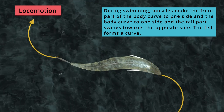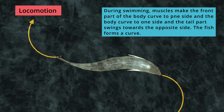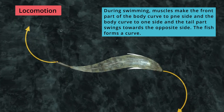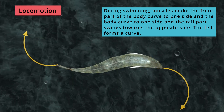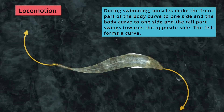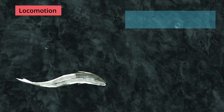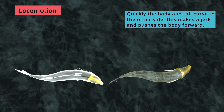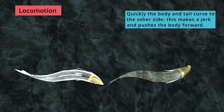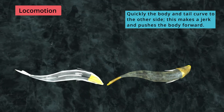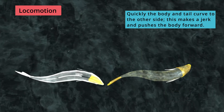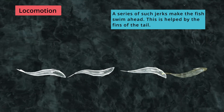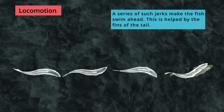The fish forms a curve with the front part and tail part. Suddenly, the body and tail curve to the other side, creating a jerk that pushes the body forward. A series of such jerks make the fish swim ahead.